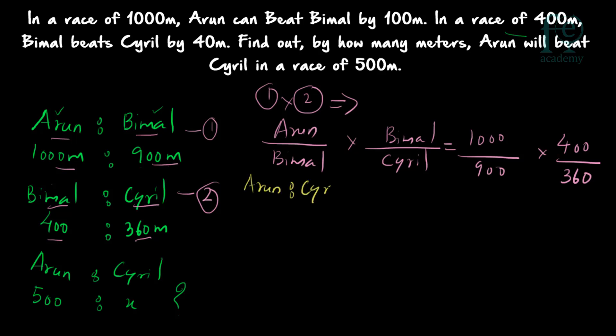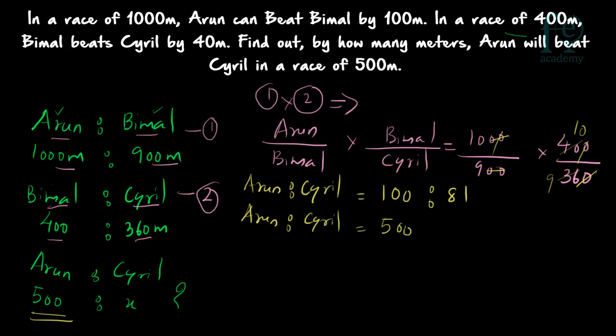So Arun to Cyril will be equal to — cancelling 36 and 40 gives us 9 and 10. So finally we get 10×10 = 100, and 9×9 = 81. So when Arun is running 100 meters, Cyril will be running only 81 meters. But our question is to find out in a 500-meter race what will happen, so we have to convert this into 500 meters. Multiplying 100 by 5 gives 500, so 81×5 = 405.